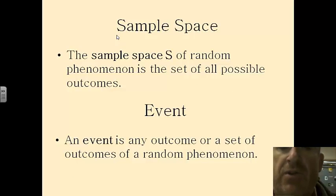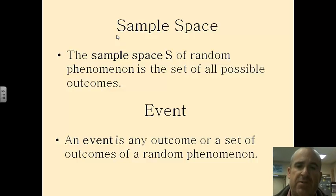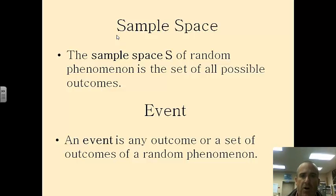That leads us to two other definitions. Sample space. A sample space of a random phenomenon is the set of all possible outcomes. An event is any outcome or set of outcomes of a random phenomenon. So a sample space is the set of all possible outcomes.